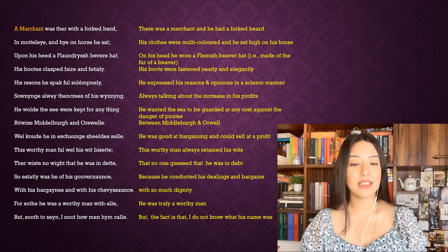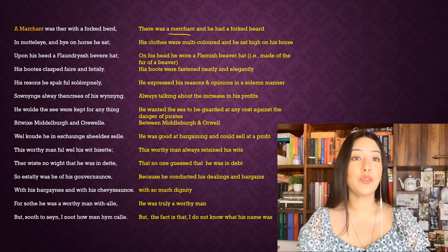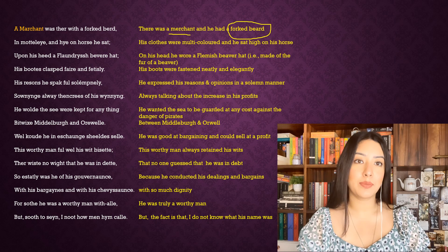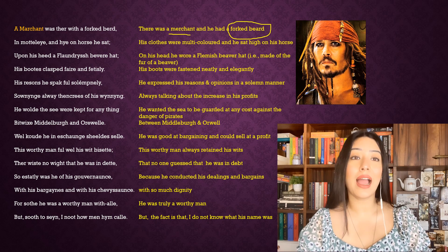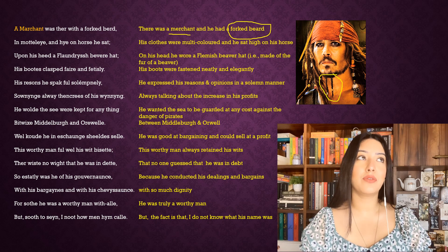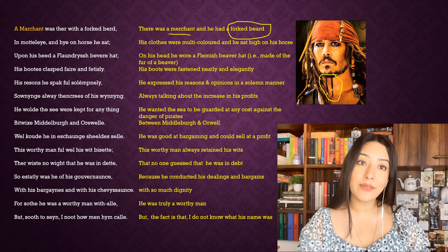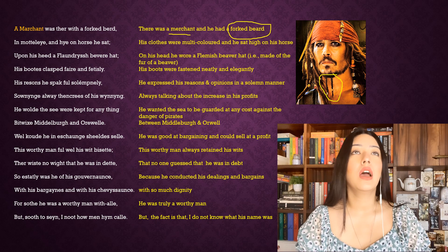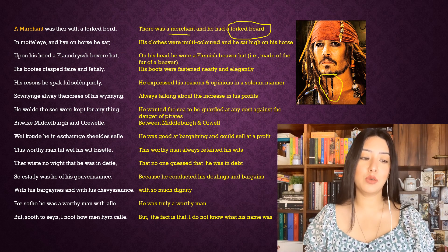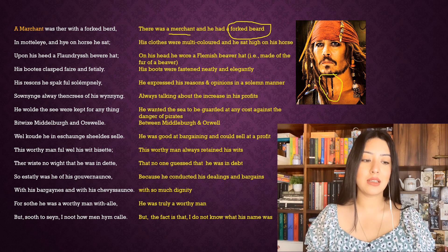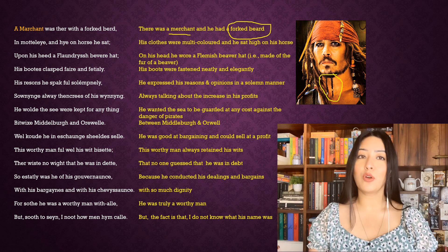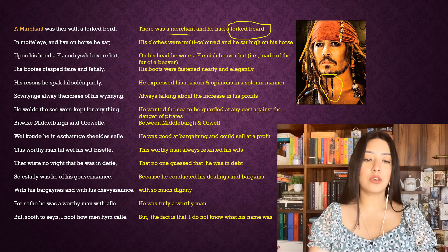So let us look at the Merchant. There was a merchant and he had a forked beard. If you remember Pirates of the Caribbean, Jack Sparrow is the one who keeps a forked beard. Vikings also kept forked beards — their beards were thicker, and sometimes they would braid them. I've included a picture of Jack Sparrow; his beard is not as thick as a Viking's, but that's a forked beard — it looks like a fork.